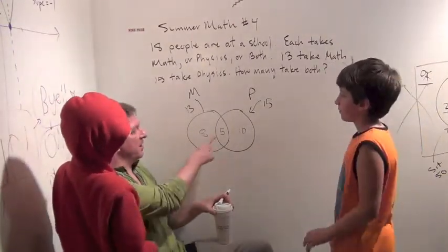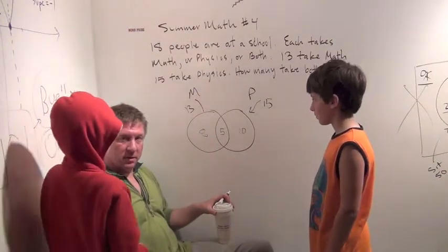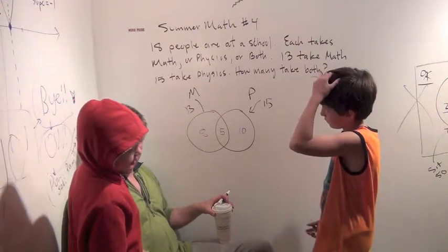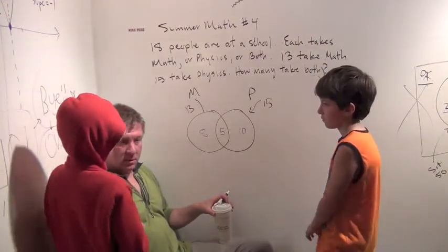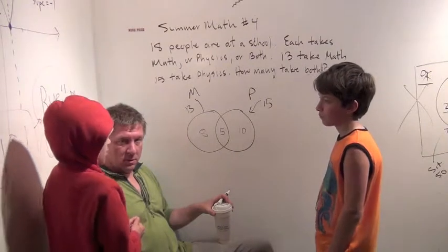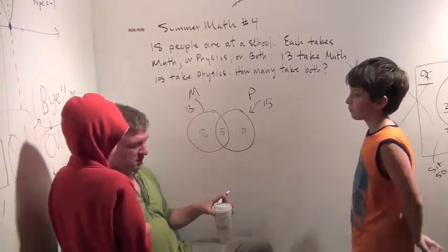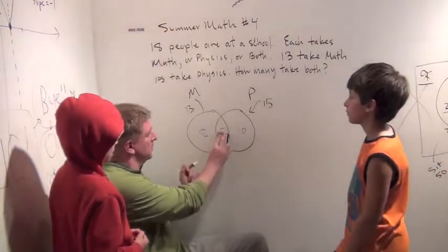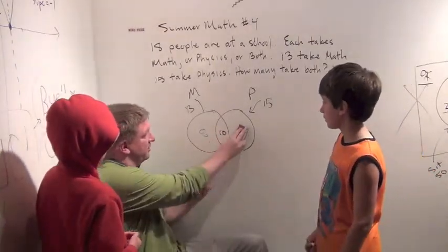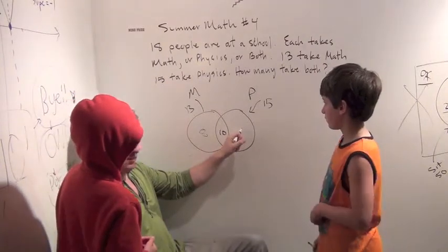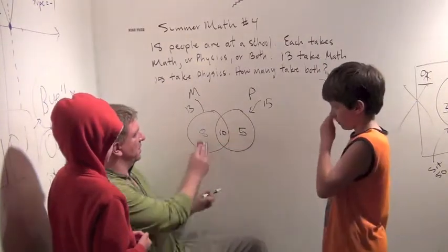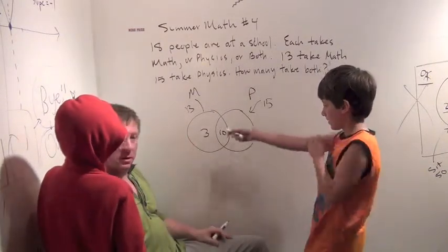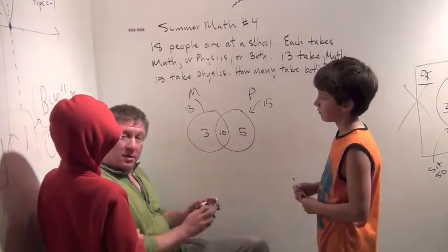Does that mean you have to subtract more people or less people? That means you have to subtract more. How many more do you have to subtract? I think it's five people. Five people more? So you want to subtract 10? So how many people are here just taking physics all by themselves? There's five people. Those are the people who only take physics. How many people only take math? Three. That is 18.